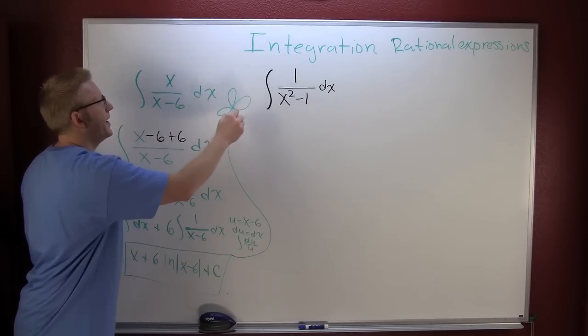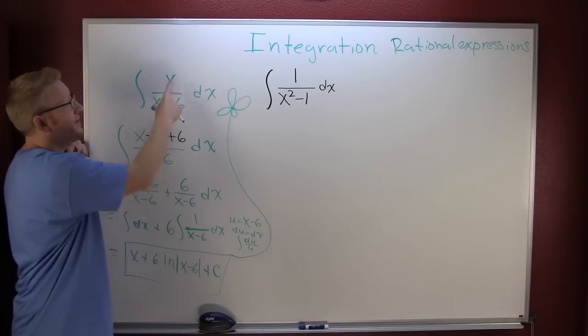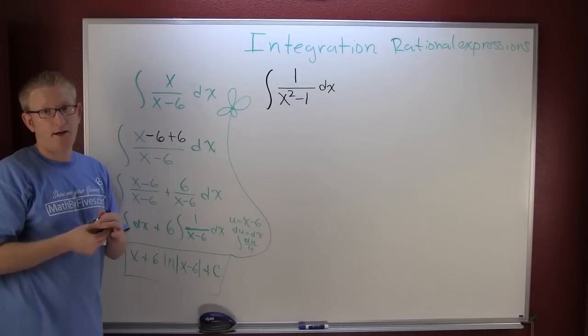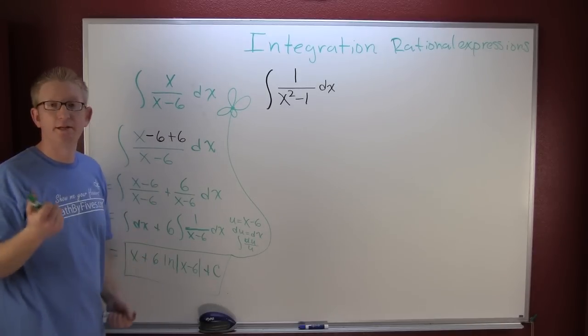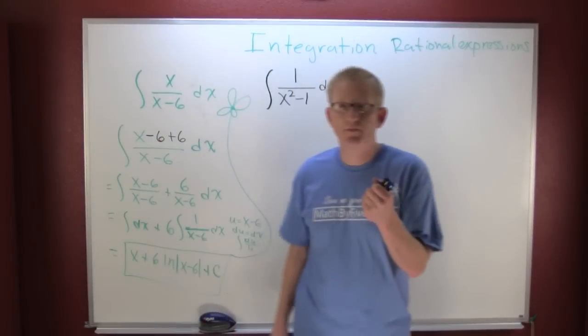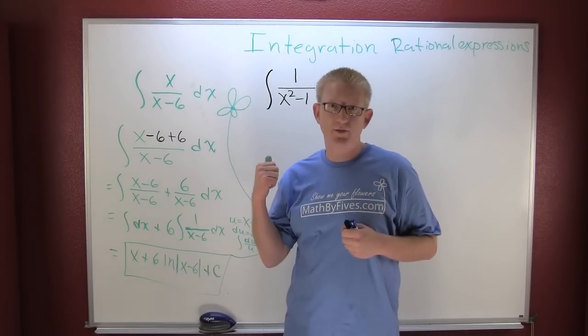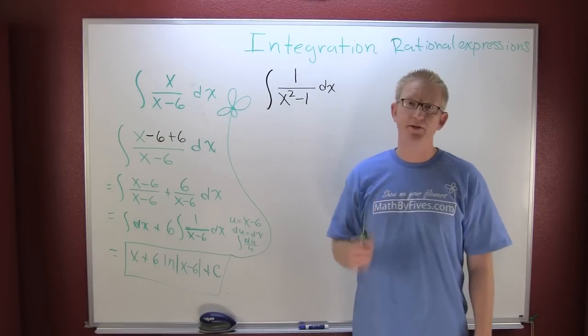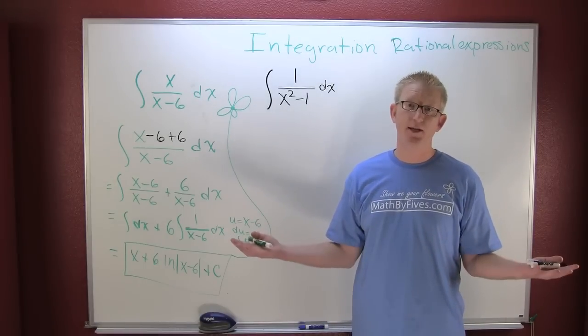Now that was when the numerator and denominator had the same degree. They both happen to be linear factors. And I'm going to work on that over here. I have a little bit more trouble in this situation. Perhaps you remember the form for this. Maybe you don't. Let's go through and integrate this.